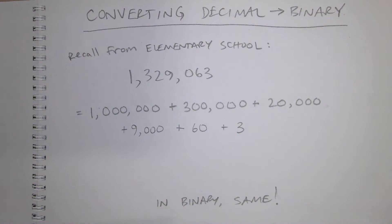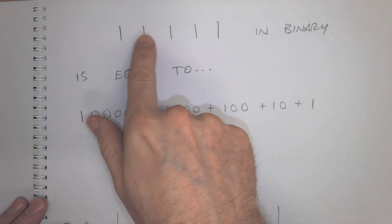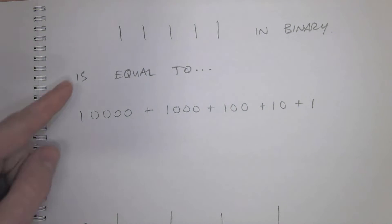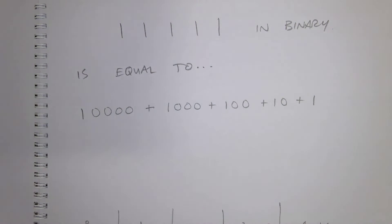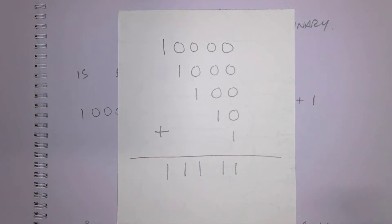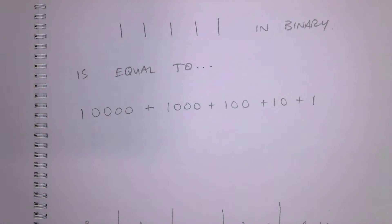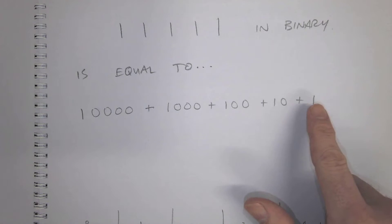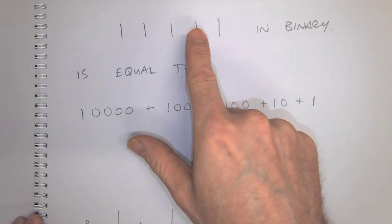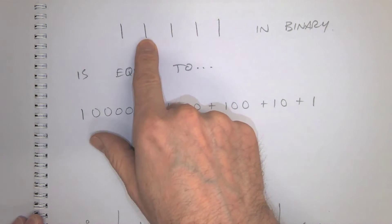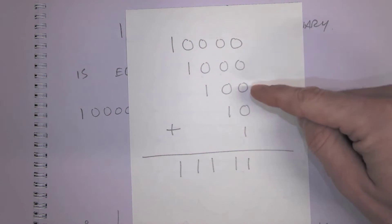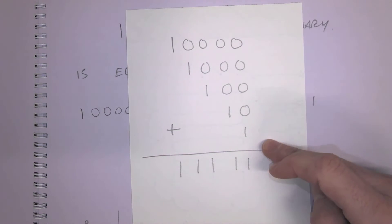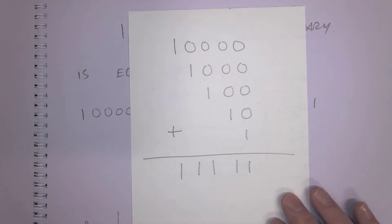Binary works the same way. If you have one-one-one-one-one-one, you can express that as one-zero-zero-zero-zero-zero plus zero-one-zero-zero-zero-zero, and so on — adding them all up exactly the same way. Each position is a power of two: two to the power of zero, two to the power of one, two to the power of two, and so on. So that's 1, 2, 4, 8, 16 — add them all together and that represents the total number.